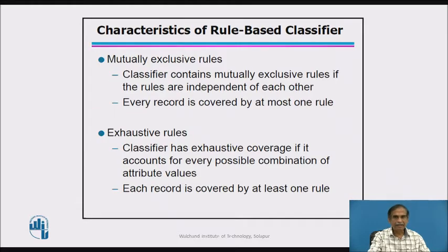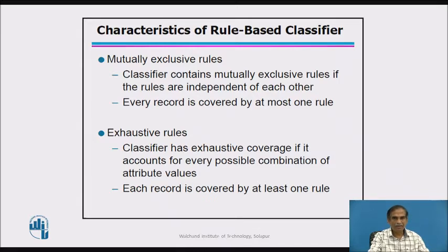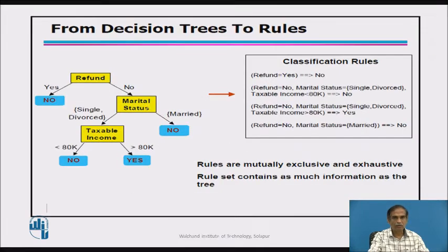The characteristics of rule-based classifiers are that they generate either mutually exclusive rules or exhaustive rules. Each record is covered by at most one rule, or each record is covered by at least one rule. Rules derived from a decision tree are both mutually exclusive and exhaustive and contain as much information as the tree.